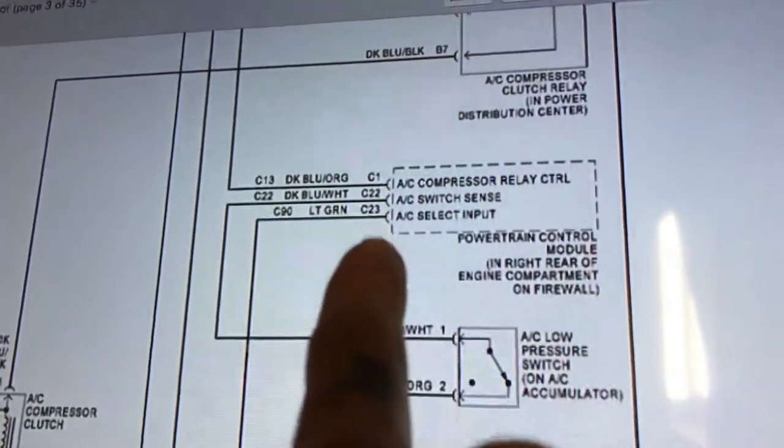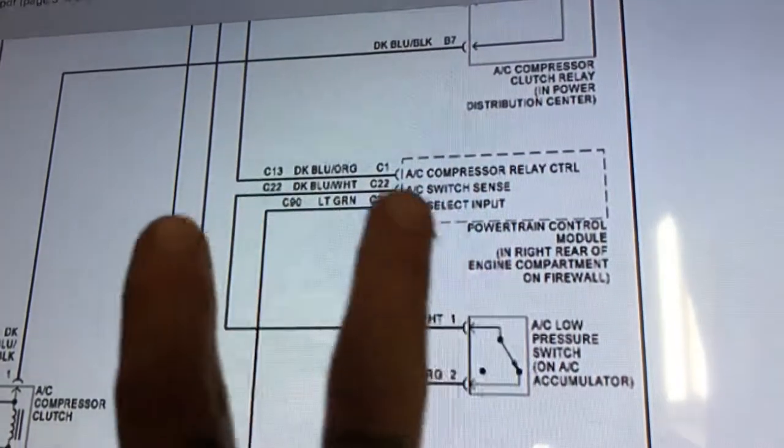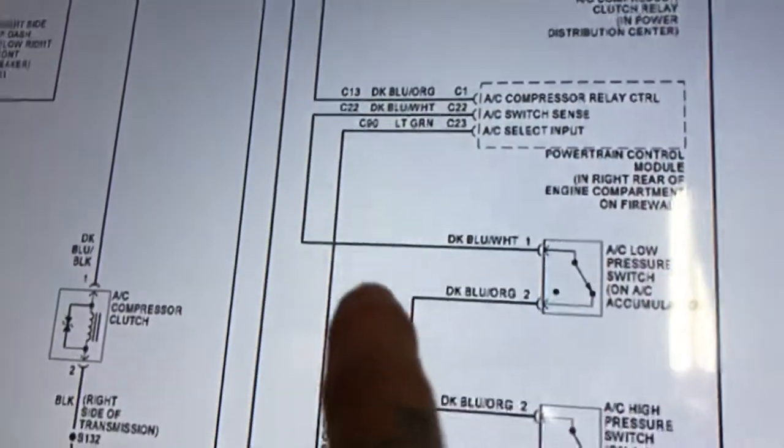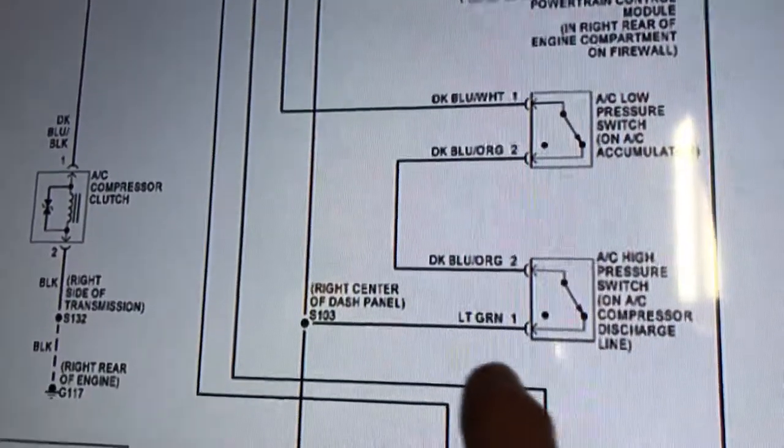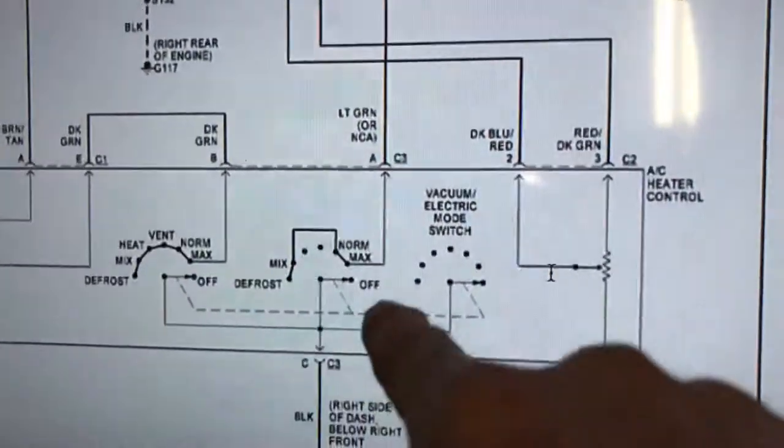The blue, dark blue slash white, and light green wires need to be tied together. Then they need to run to the regulator switch and then that needs to run to the switch on the dash.